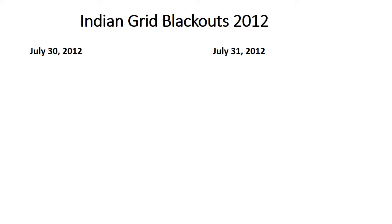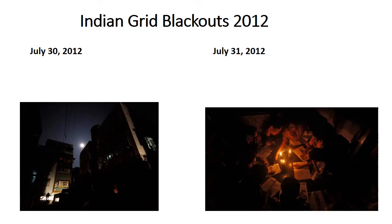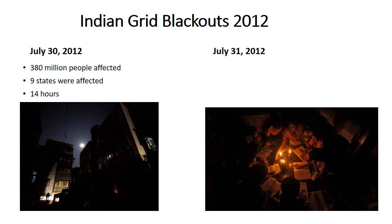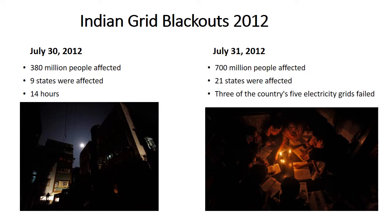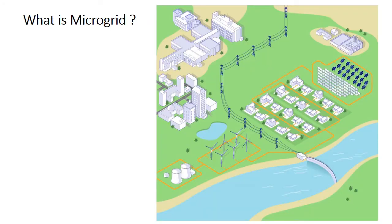On 30th and 31st July 2012, two large-scale blackouts occurred in India, which can easily be termed as the worst power crisis ever in history of mankind. Just imagine the condition of thousands of hospitals, critical infrastructure, and educational institutes. In the first blackout, 380 million people in nine states were affected and it lasted for 14 hours. On the second day, 700 million people in 21 states were affected, and three of the country's five electricity grids failed.